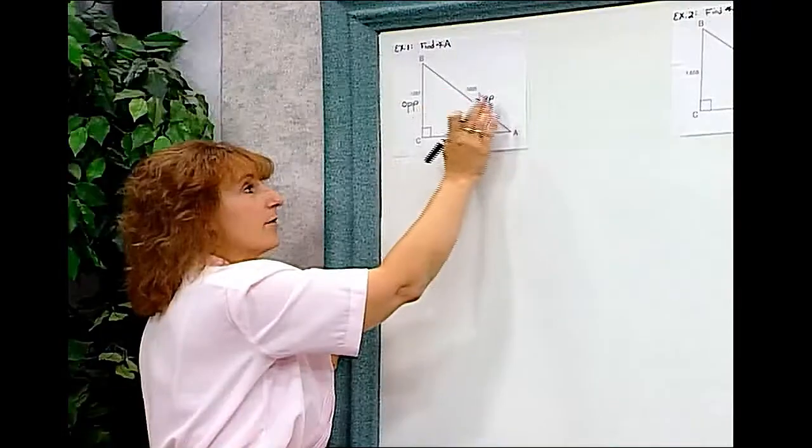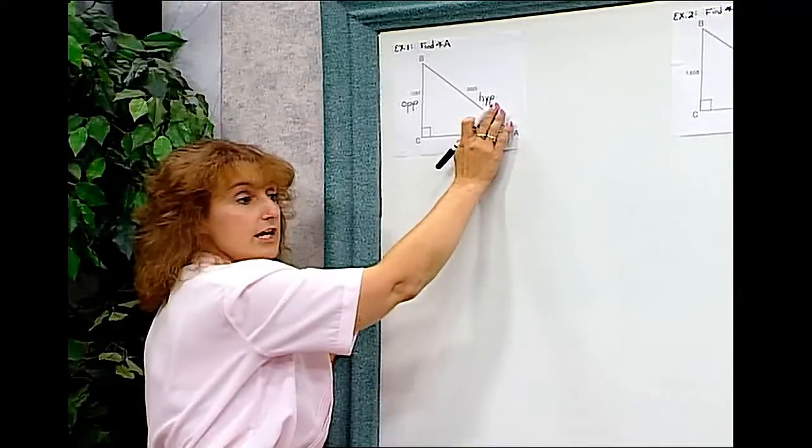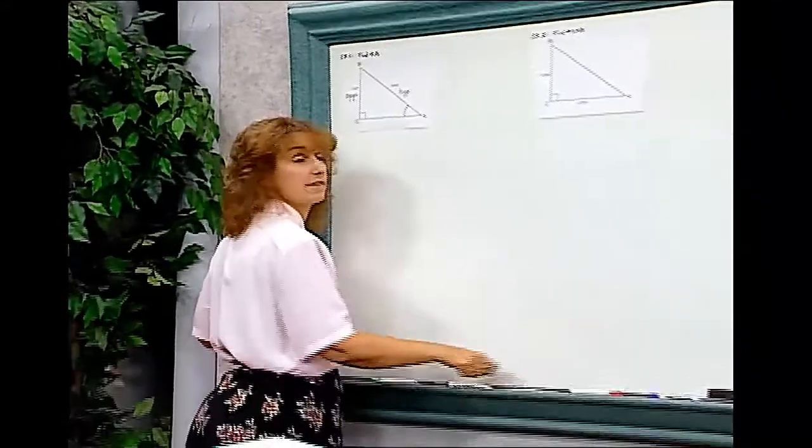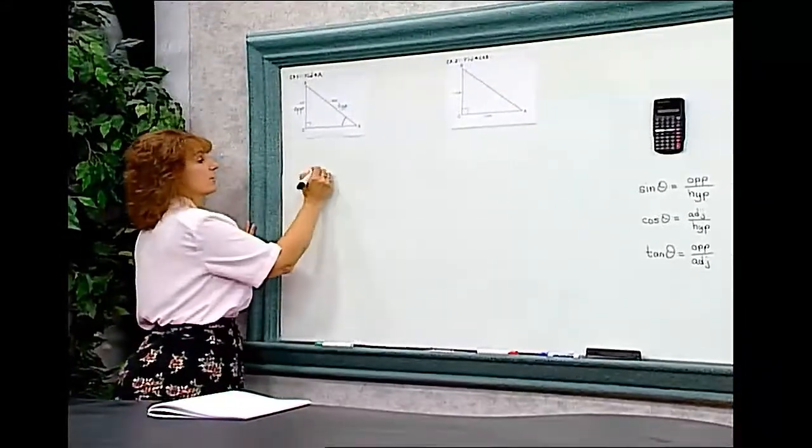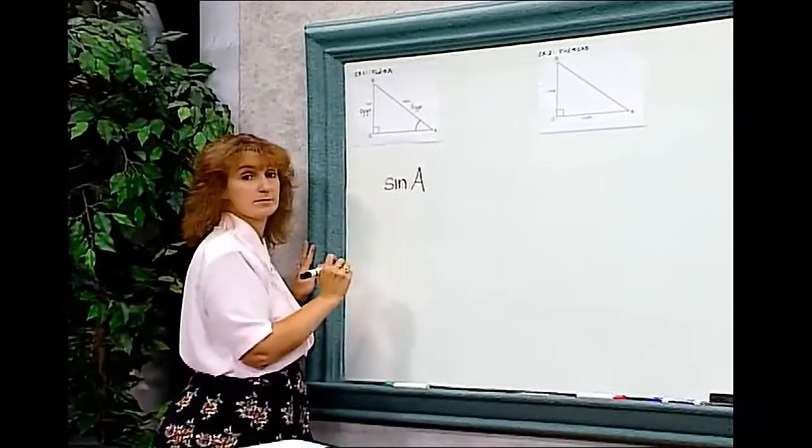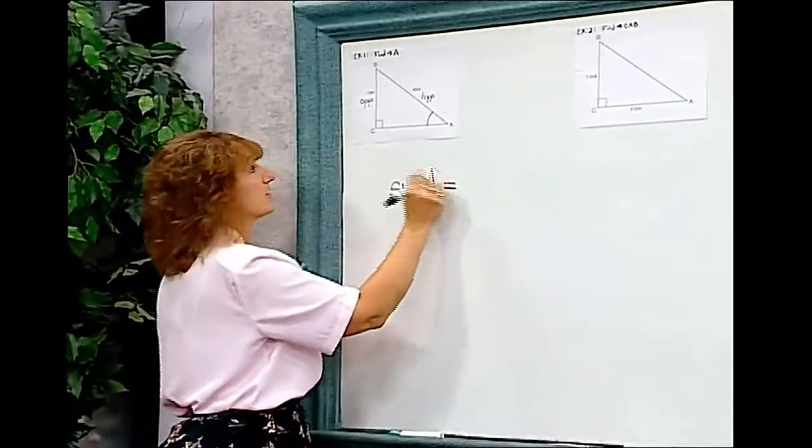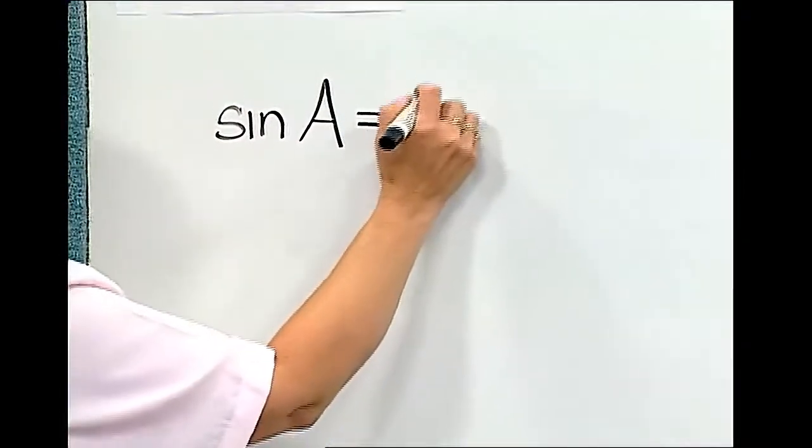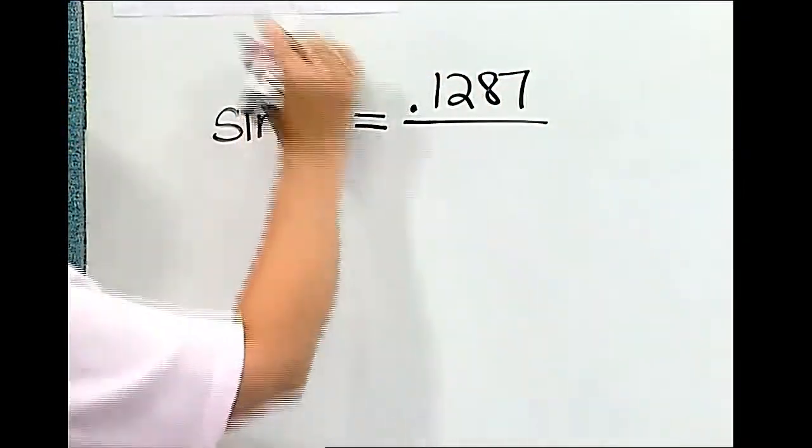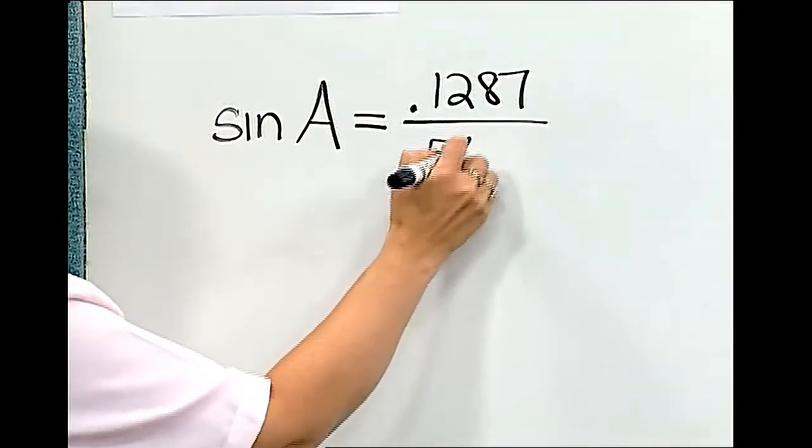So we have the opposite and we have the hypotenuse. If we look at our three trig ratios, we're going to be using the sine of theta. So the sine of theta, or angle A, which is what we have in this picture, is equal to opposite 0.1287 over hypotenuse 0.5625.